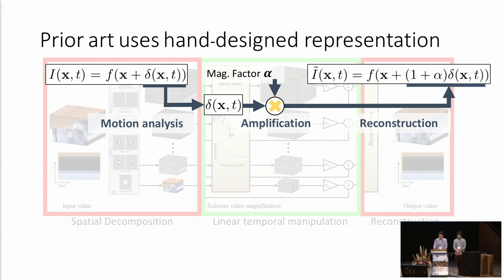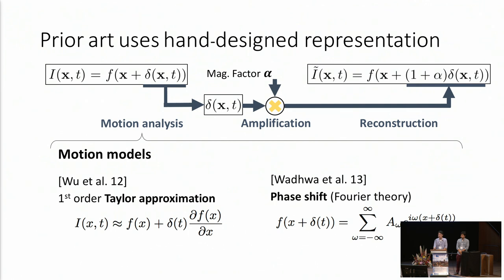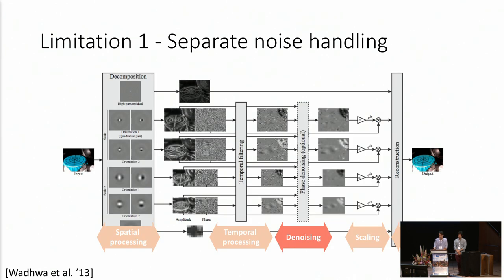In prior art, extracting motion information has been done by spatial decomposition and temporal filtering. Wu et al. used a first-order Taylor approximation, and Wadhwa et al. used Fourier theory and represent the displacement by phase.